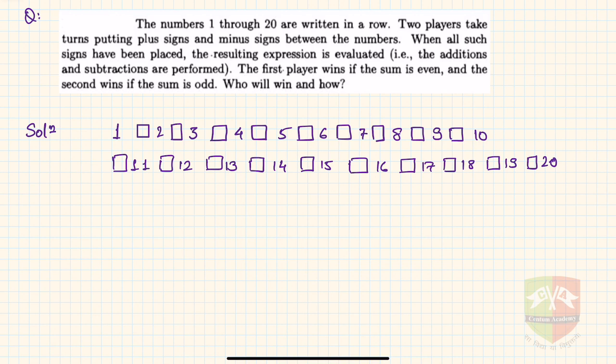The first player wins if the sum is even and the second wins if the sum is odd. So the question is who will win and how? Now I have written these 20 numbers not in a row but in two rows, and I have also shown some boxes where plus or minus signs have to be placed.